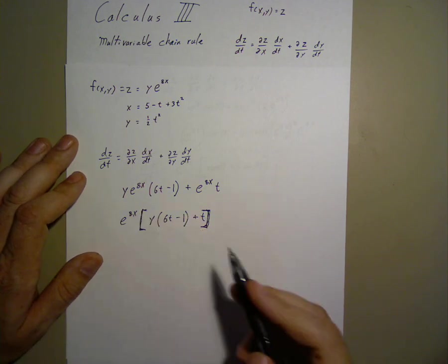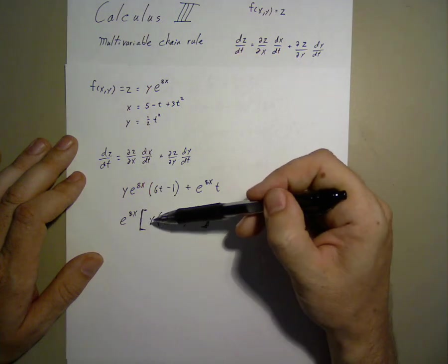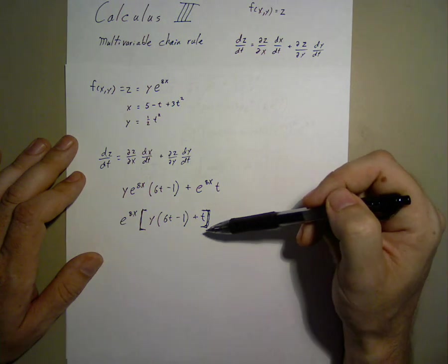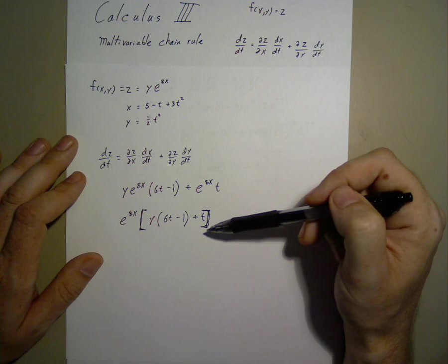Finally, we need to substitute in our values for x and y. We could leave it as this, but we want it properly in t.